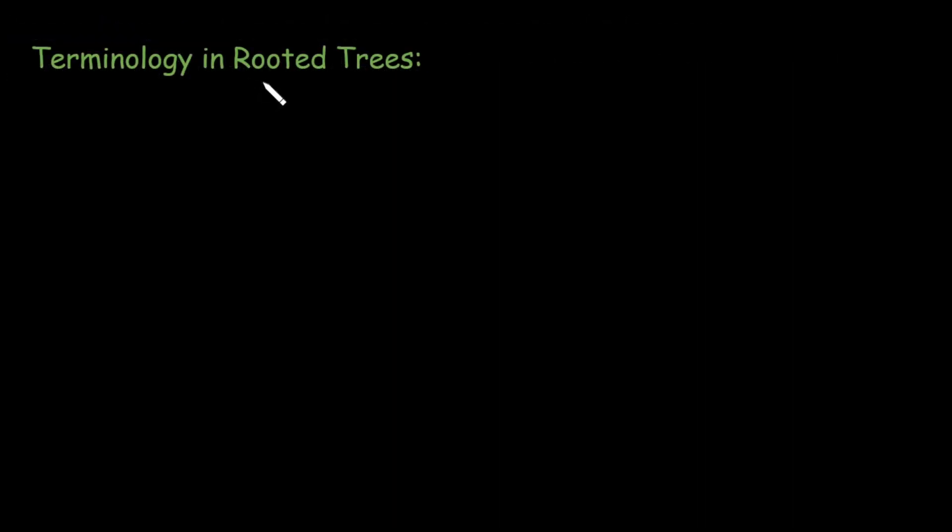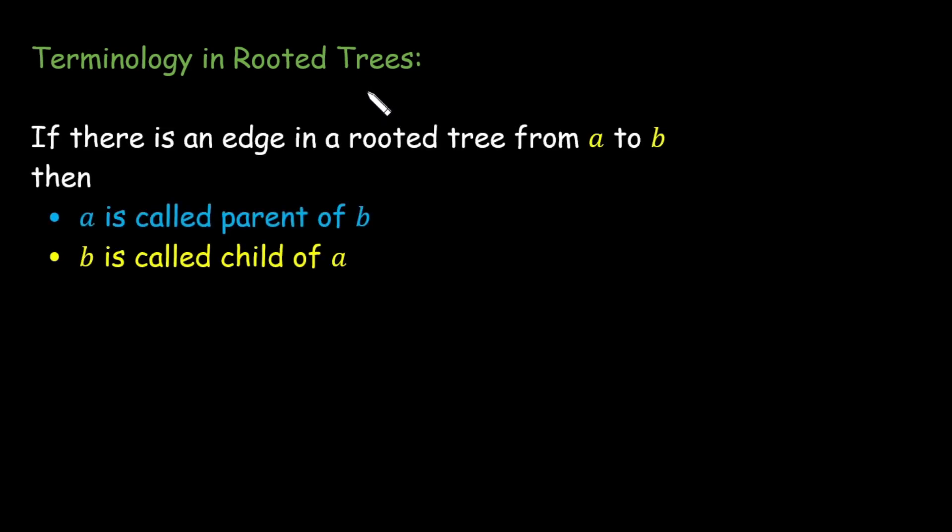Next we have terminology in a rooted tree. Rooted tree has terminology that is inspired by biological and geological trees. For example, if there is an edge in a rooted tree from vertex a to vertex b, then a is called the parent of b whereas b is called the child of a.